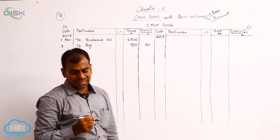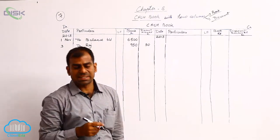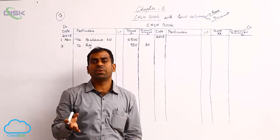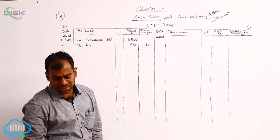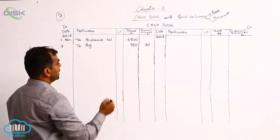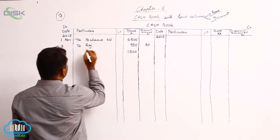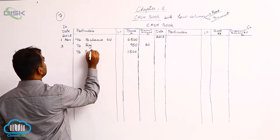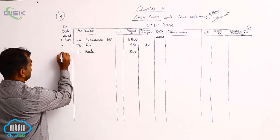Next, on 6th November, there is a sales transaction, meaning cash sales. The money will be deposited into our bank, so the amount of 1500 is recorded on the debit side in the bank column. The particulars column shows 'sales', and the date is the 6th.